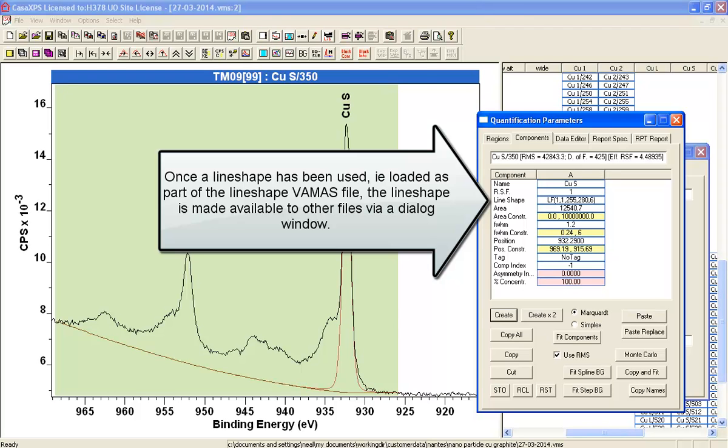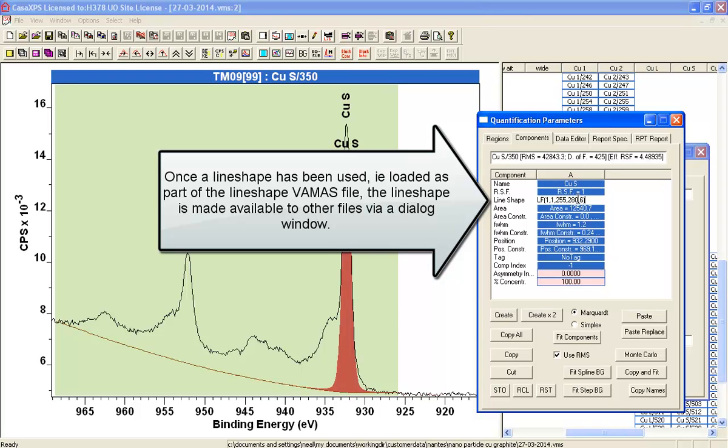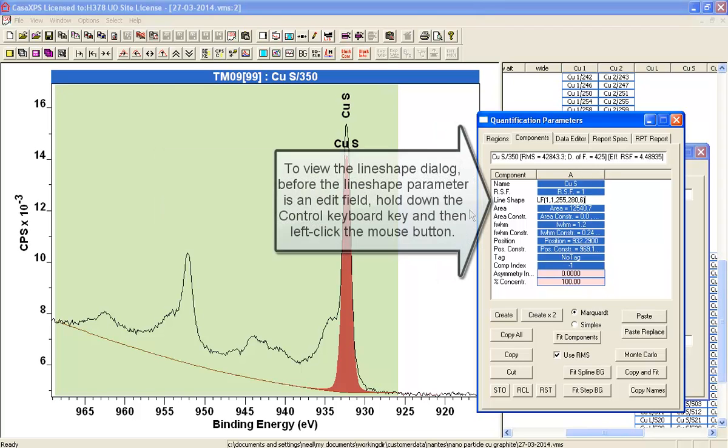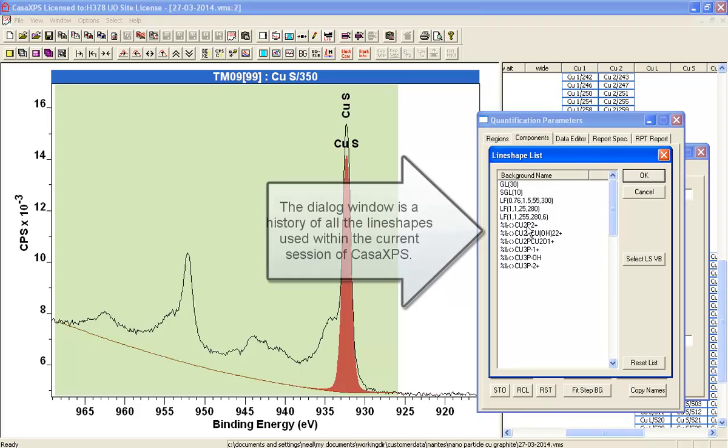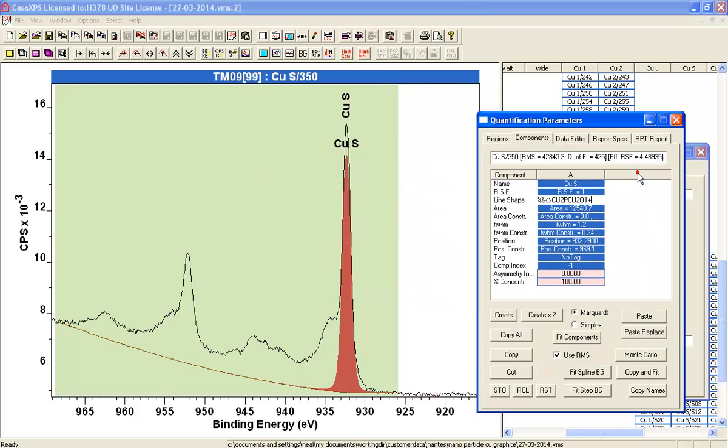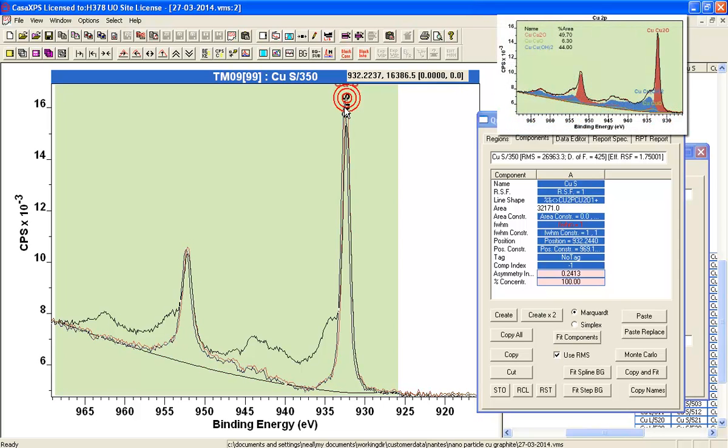And the first thing I've done is I've created a peak, and it's brought in a line shape, but it's not the one from the library. So I want to hold the control key down and click before the edit field. And this shows me all the line shapes that have just been loaded from the library file. So the first one I'm going to put in is going to be the Cu1+. And I'll just say Fit to that. And you can already see that Cu1+ is a significant part of these data.